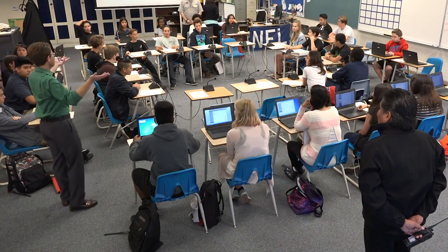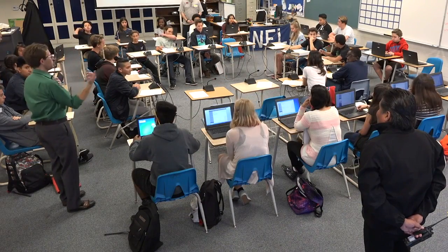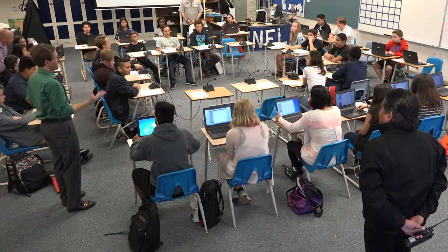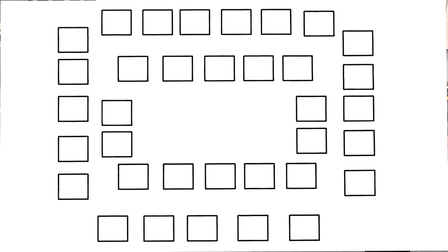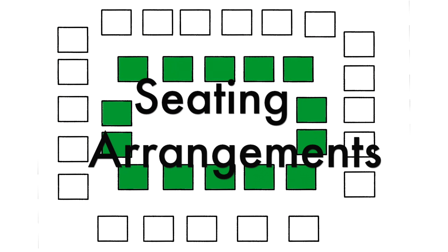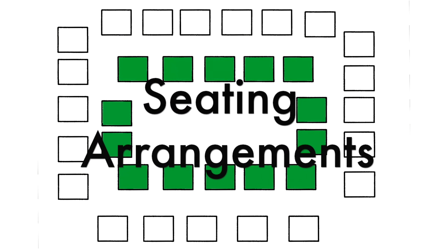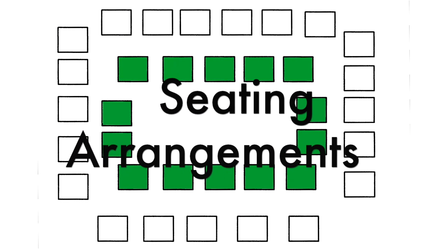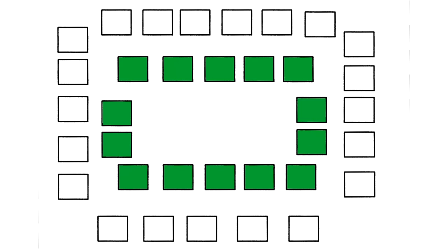The digital hybrid takes a Socratic seminar and the Socratic method and basically divides it in half, where the first circle is about 40 to 50 percent of your class — students that are going to be doing more of a traditional model Socratic method.